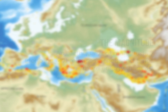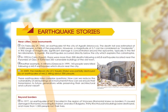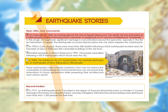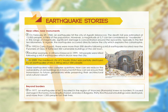Another key concept is building vulnerability. In fact, earthquakes don't kill people, but poorly constructed buildings do. The Agadir earthquake in 1960 in Morocco is an example of the dramatic consequences of poorly constructed buildings. The magnitude of the earthquake was moderate, around magnitude 6, but it flattened the city and killed 12,000 people.